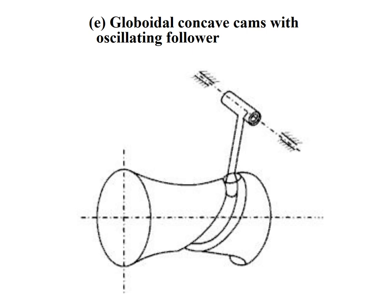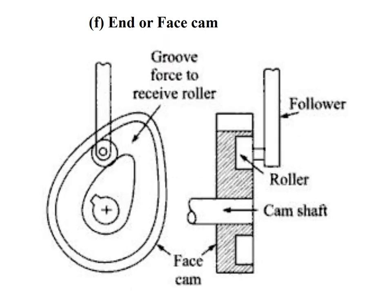A globoidal cam: here a spherical cam is used to provide desired motions to the follower. End or face cam: here the face of the cam is used to provide desired motions to the follower. In this type of cam, a groove is cut on the face of the cam and the follower is fitted into the groove, as shown in the diagram.